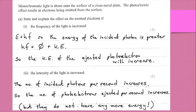A past exam question: monochromatic light — light of one frequency — is shone onto the surface of a clean metal plate; the photoelectric effect results in electrons being emitted. State and explain the effect on the emitted electrons if: first, the frequency of the light is increased. E equals HF, so the energy of the incident photon is greater. Since HF equals phi plus KE, if the frequency increases, the kinetic energy of the ejected photoelectron will increase. Part two: if the intensity of the light is increased, the number of incident photons per second will increase, so the number of photoelectrons ejected per second increases. It's not that they have any more energy — it's just that we get more of them. Remember: one incident photon, one ejected photoelectron.